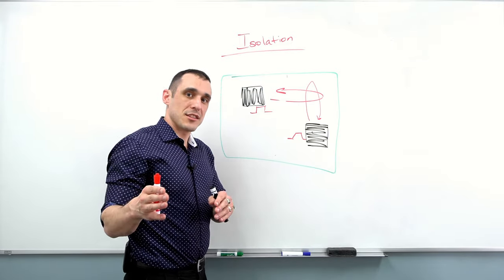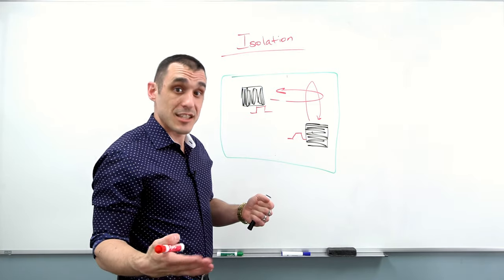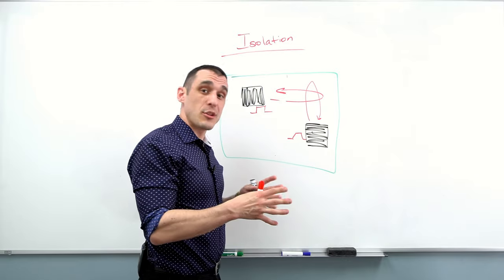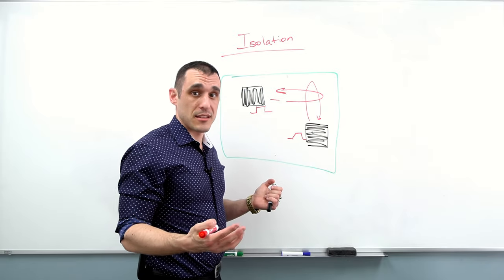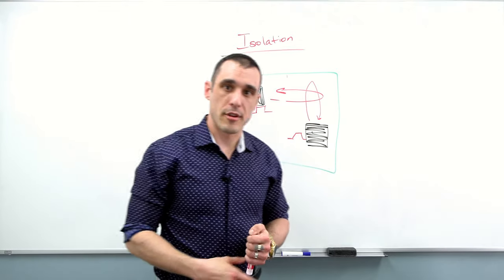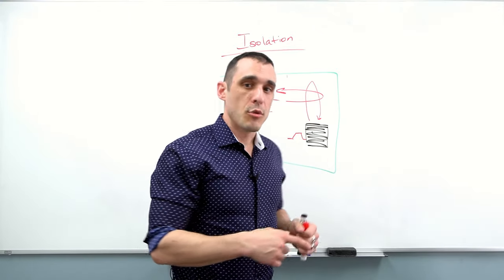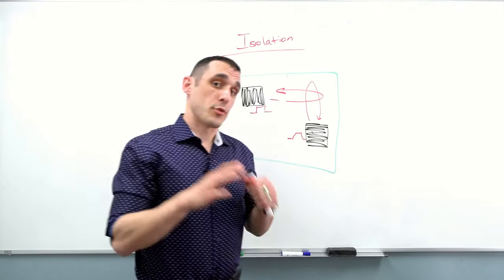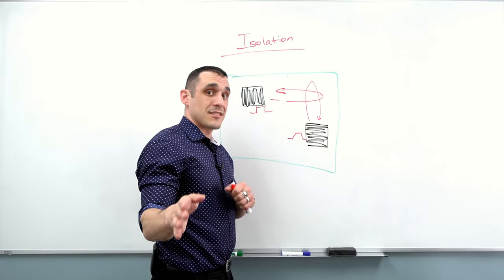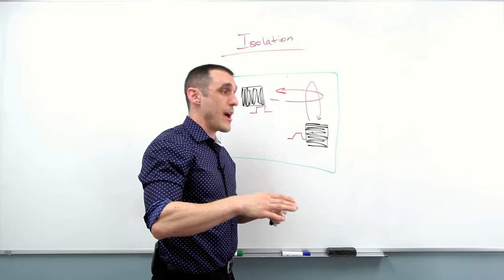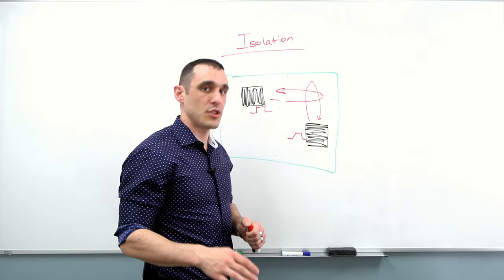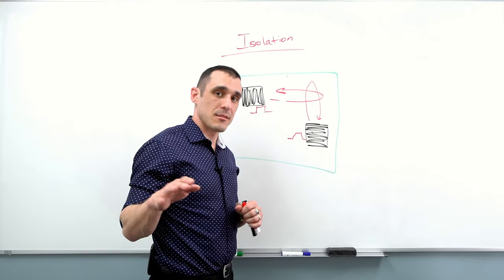There are some specialty cases where you actually might need to split up the ground plane because the frequencies involved are such that it's the only way to provide any kind of isolation. One great example is precision DC measurements — with highly precise DC measurements, the return paths are such that you actually have no choice but to split up the ground planes in order to provide the isolation you need.